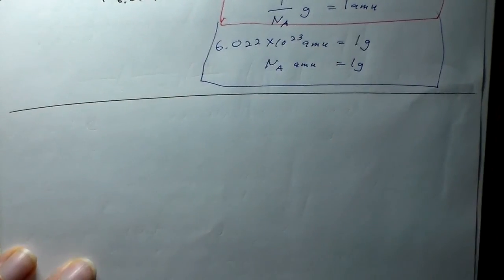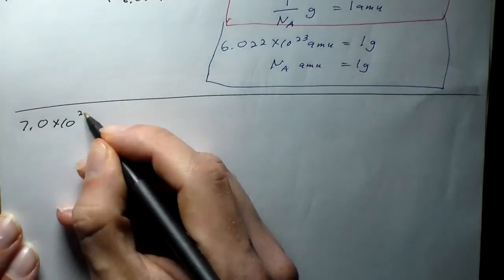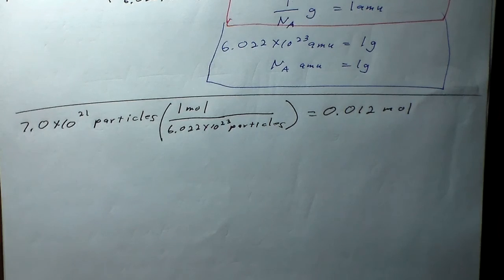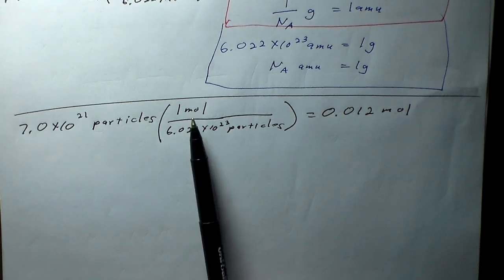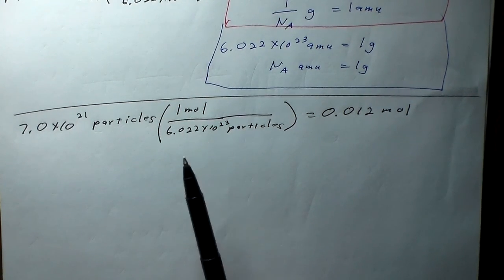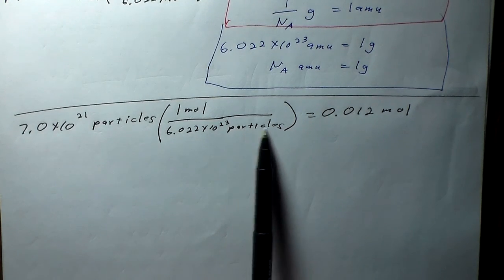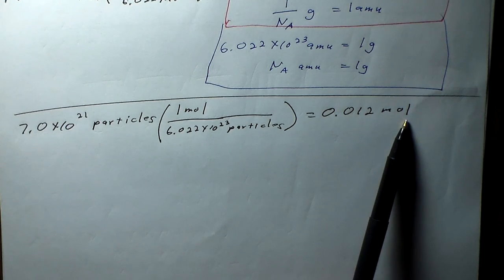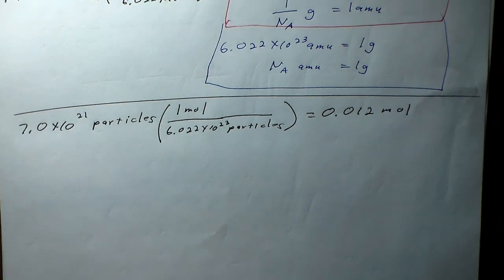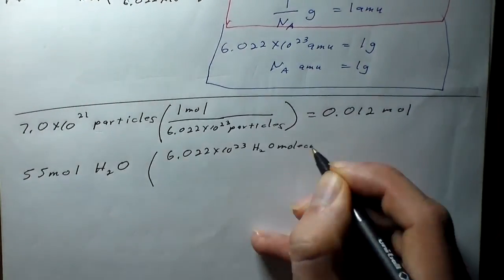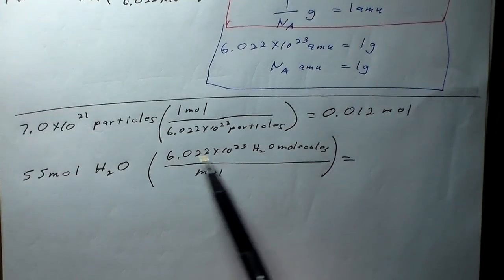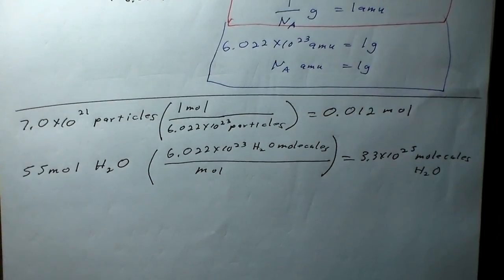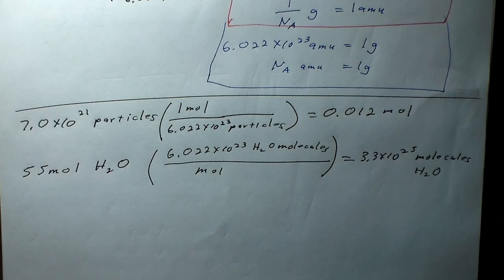Let's do some conversion examples. If you have 7 × 10²¹ particles and divide by Avogadro's number (6 × 10²³ particles per mole), you get 0.012 moles. Conversely, 55 moles of water multiplied by Avogadro's number gives 3.3 × 10²⁵ molecules of water.